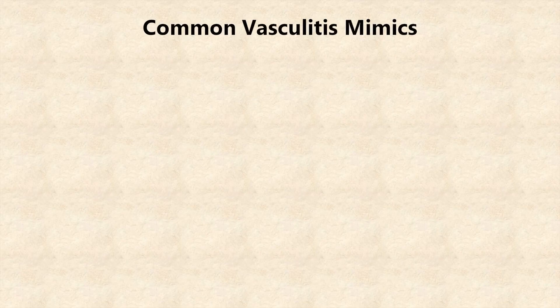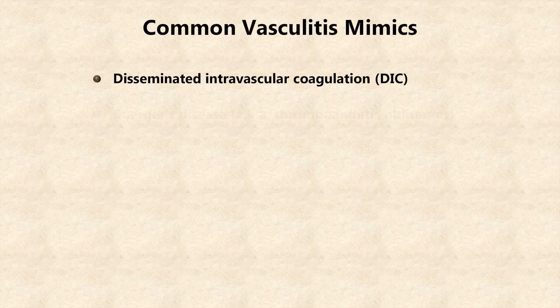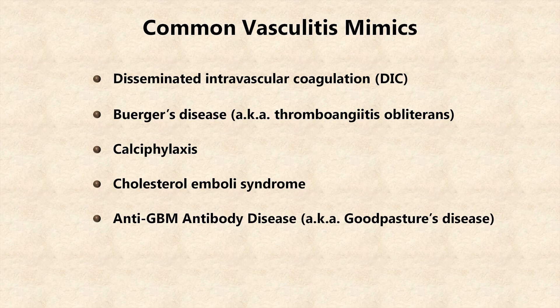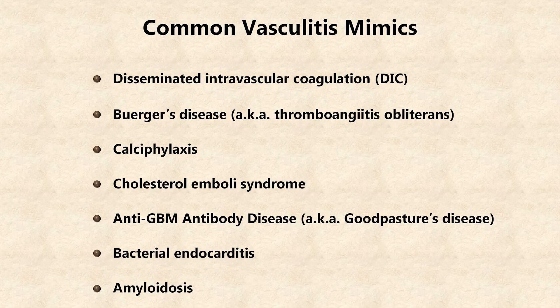There are also many diseases which can mimic vasculitis, including DIC, Buerger's disease, calciphylaxis, cholesterol emboli syndrome, anti-GBM antibody disease, bacterial endocarditis, and amyloidosis. Some sources actually list Buerger's disease and anti-GBM antibody disease as true vasculitis, highlighting the overlapping and incompletely understood pathophysiology of all these disorders.